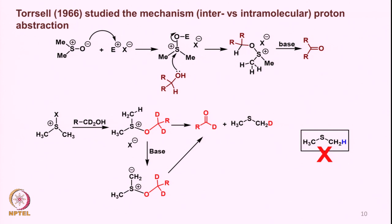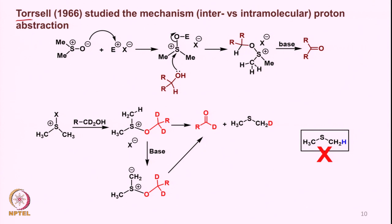Whether the reaction involves abstraction of a proton in an intermolecular or intramolecular fashion was studied in detail by the scientist Torsal in 1966. As we have seen, DMSO gets activated with an electrophile forming a first crucial intermediate, to which alcohol attacks forming a second crucial intermediate — from where either the proton can get abstracted to lose dimethyl sulfide and give the ketone, or there is a possibility of removing this proton first since this carbon is next to the positively charged sulfur.